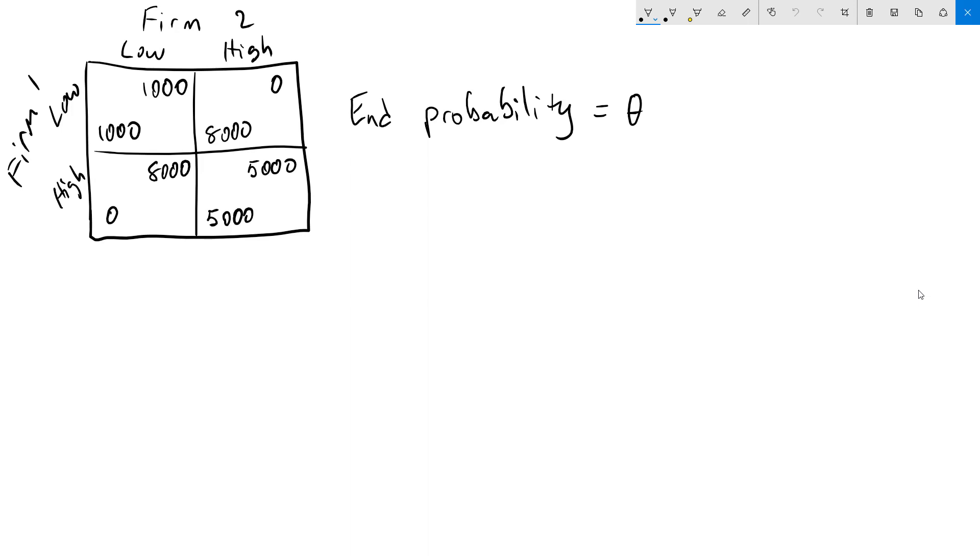Hello everyone. In this video I'm going to go through an example of a repeated Prisoner's Dilemma game where the last period is uncertain.